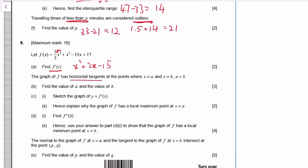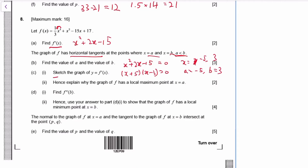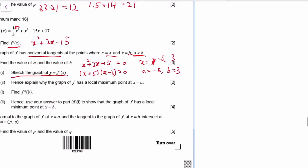The graph has horizontal tangents at two points. Horizontal tangent means the tangent has gradient zero, so we set the derivative equal to zero and solve. Factorising x² + 2x − 15 gives x = −5 or x = 3. So a is the smaller value: a = −5, and b = 3. To sketch the graph of the derivative — it's a quadratic with x-intercepts at −5 and 3.